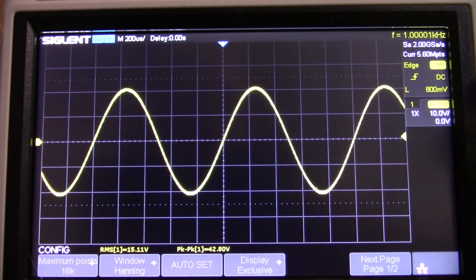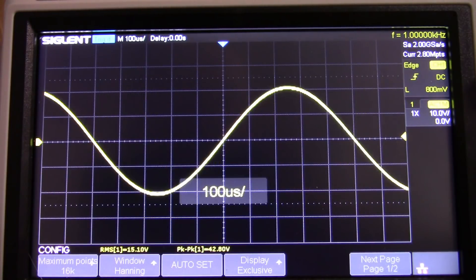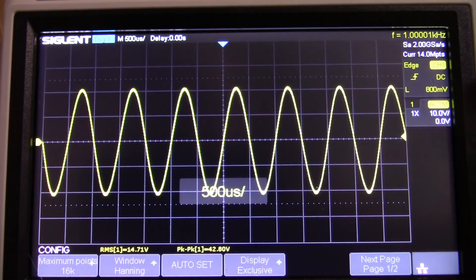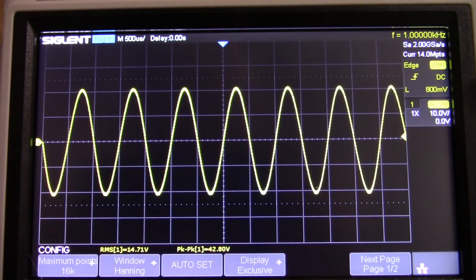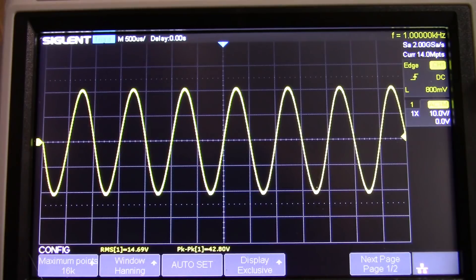I have to put more waveforms on the screen. Because the scope won't give you an accurate voltage measurement unless you have at least, I don't know, six or eight waveforms on the screen. So let's see what our voltage is. 14.69 it looks like.